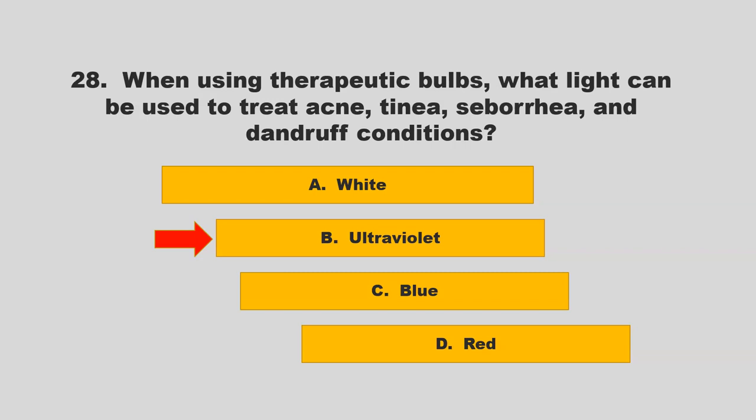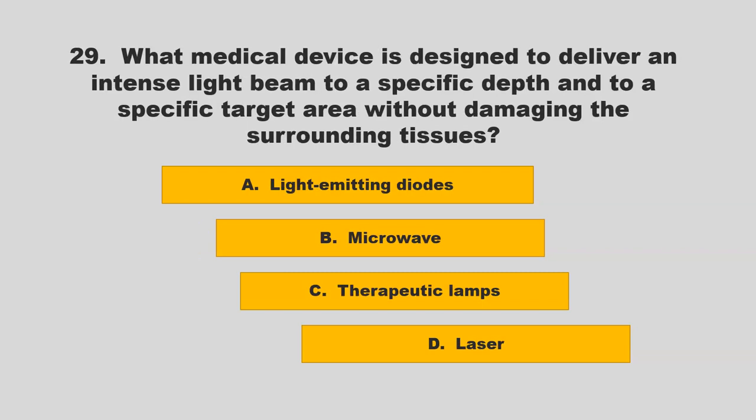What medical device is designed to deliver an intense light beam to a specific depth and to a specific target area without damaging the surrounding tissues? Is it light emitting diodes, microwave, therapeutic lamps, or laser? If you chose D, laser, you are correct.